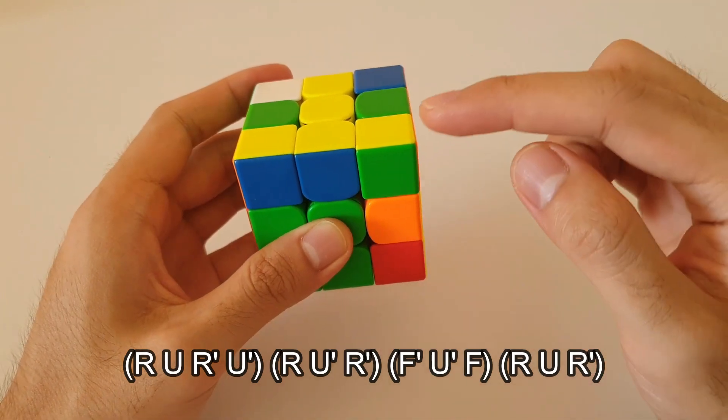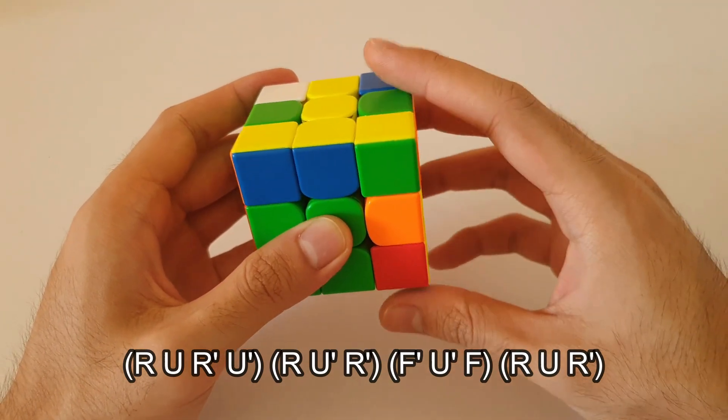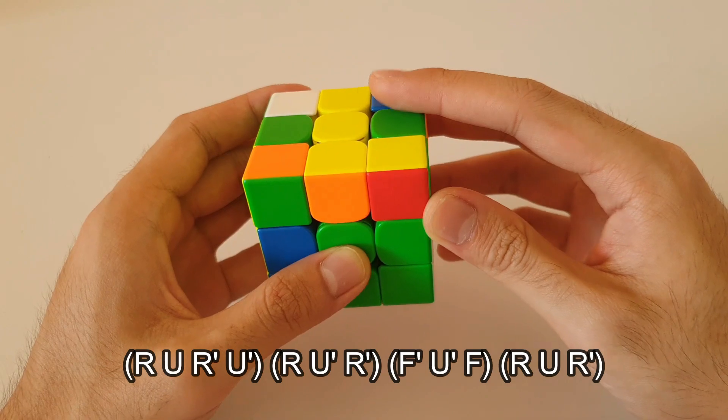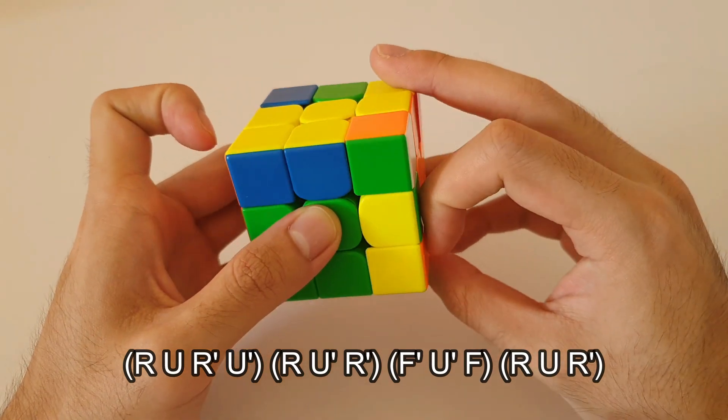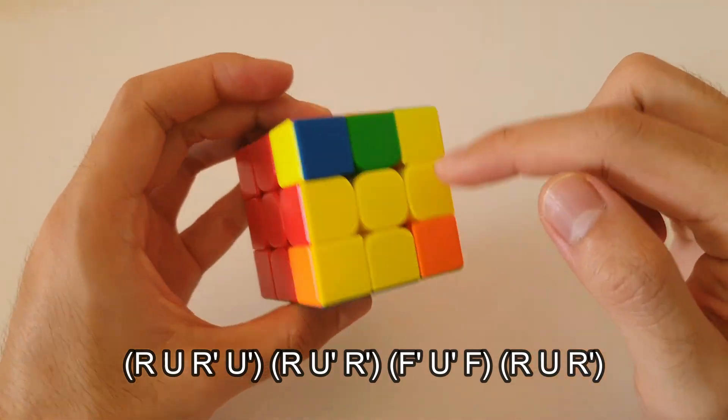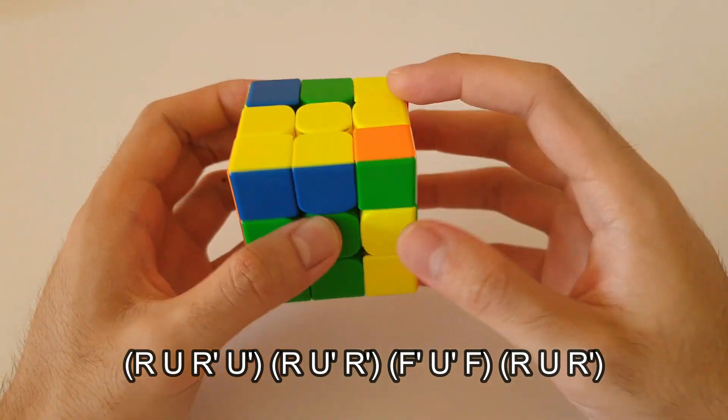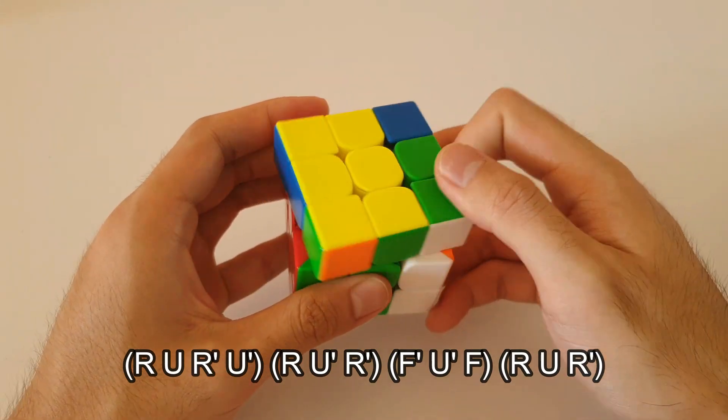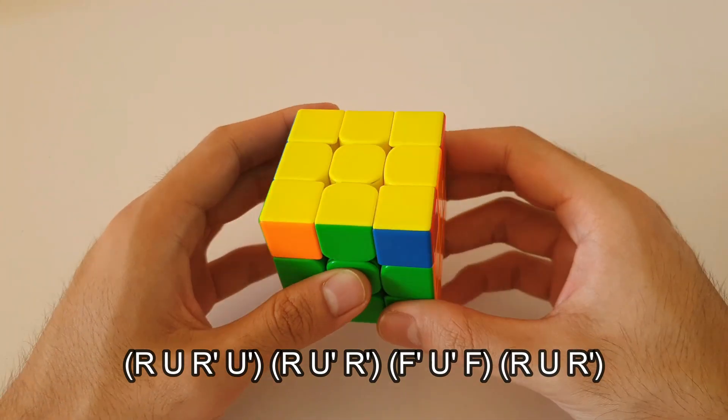Following that, you can kind of think of inserting this corner into the slot using F moves, like this. And finally, you're actually going to be inserting this F2L pair, which I'm sure you all know how to do. And after you've done that, you've solved the OLL case.